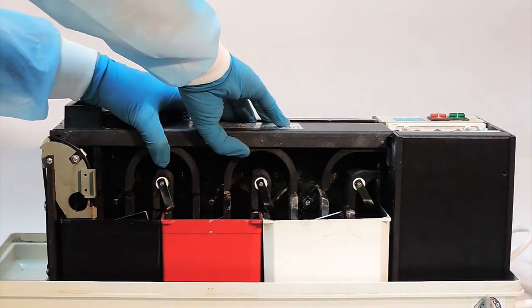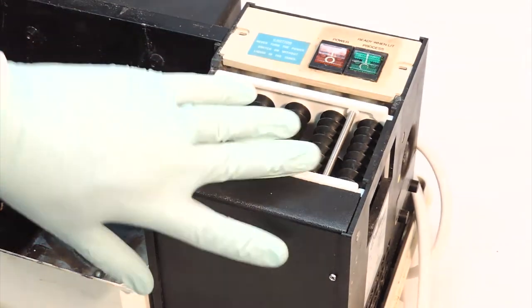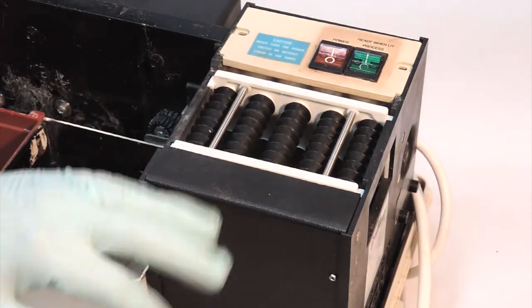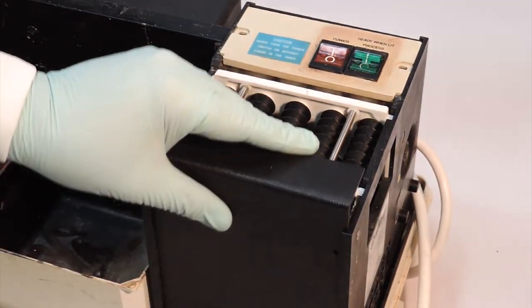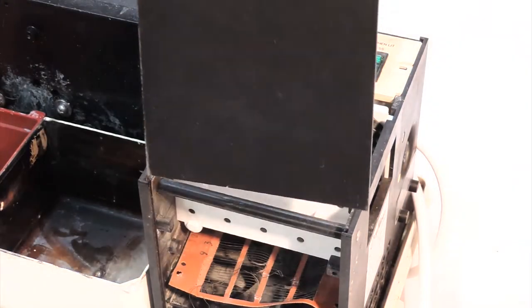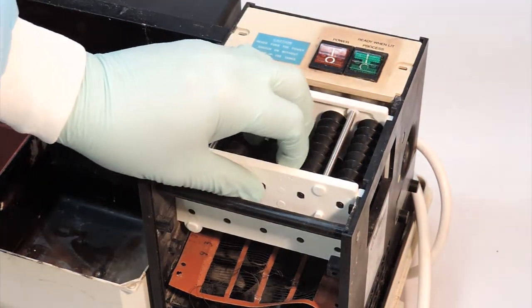Next we'll want to gain access to the dryer heater assembly and thermal fuse by removing the front panel held in place with a screw. Once the panel is removed, you may remove the dryer roller from the assembly.